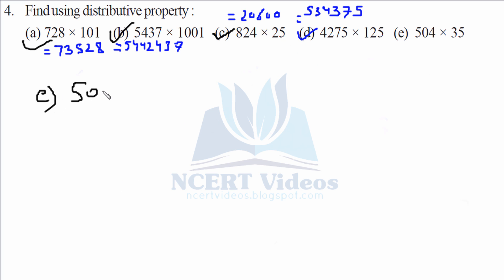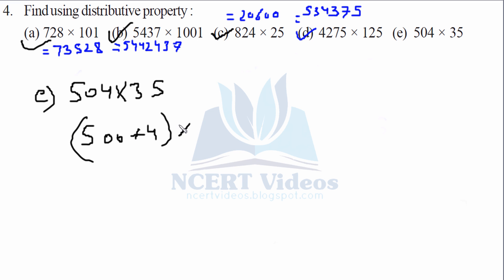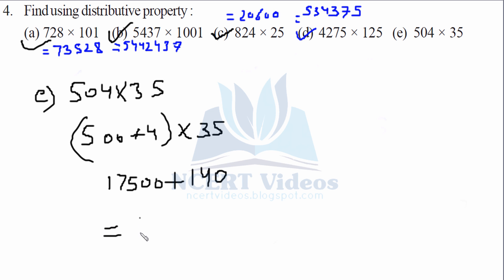Part E: 504 into 35. We split 504 as 500 plus 4. Applying distributive property: 500 into 35 gives 17500, plus 4 into 35 is 140. Adding them gives 17640 as your answer. That completes question four.